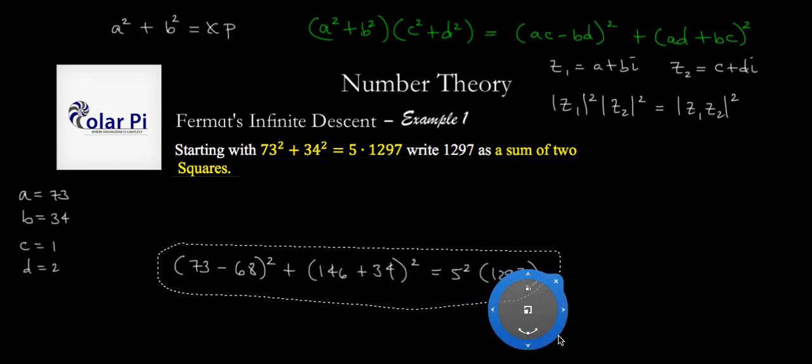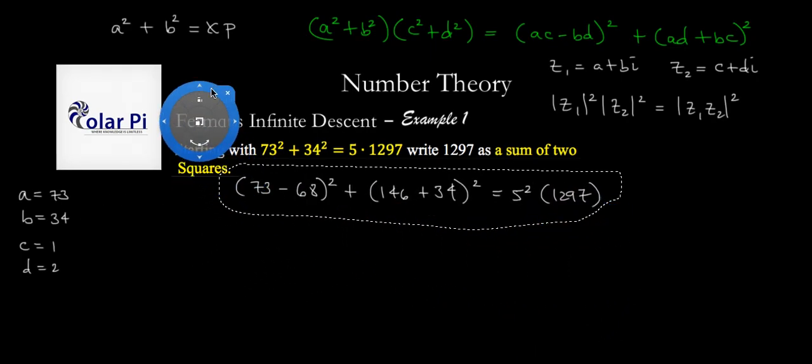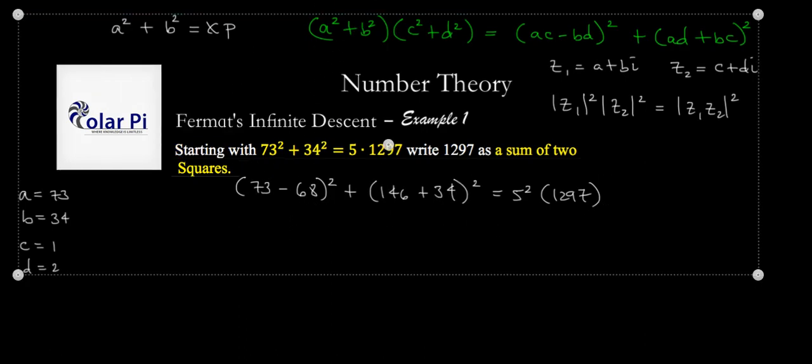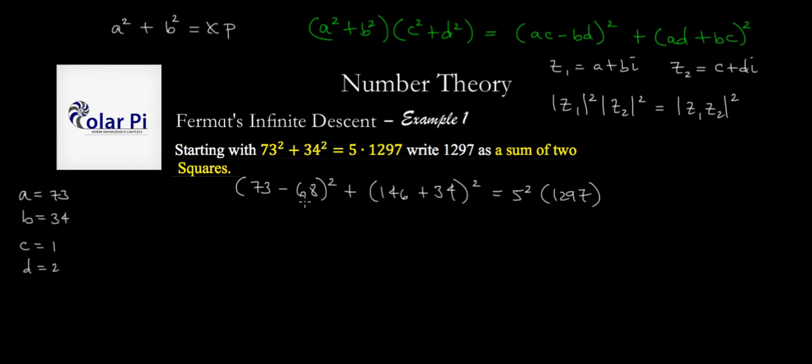So clearly 73 minus 68 is 5, so we have 5 squared. Plus 146 plus 34 is 180, so we have plus 180 squared equals 5 squared times 1297.